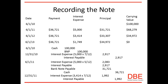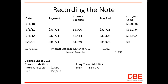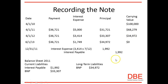We then do the adjusting entry for 12-31-11, using seven-twelfths of the second year's interest expense of three thousand four hundred and fourteen dollars. On the balance sheet at this point, the note payable shows thirty-three thousand three hundred and seven dollars due in the upcoming year as a current liability, and approximately thirty-four thousand dollars in the long-term liability portion.